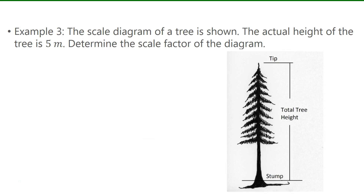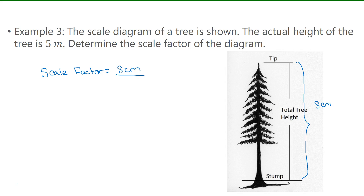For example 3, the scale diagram of a tree is shown, and the actual height of the tree is 5 meters. We need to determine the scale factor. Using a ruler, I measure the height in the diagram from the tip down to the stump and got 8 centimeters. Now I need to divide that by the actual height of 5 meters. Since the units are different, I'll convert 5 meters into centimeters, giving me 8 centimeters over 500 centimeters.